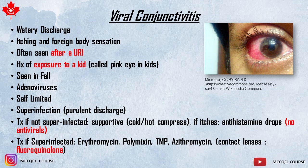In case of viral conjunctivitis, the discharge is not purulent — it's just watery and clear. It often accompanies an upper respiratory tract infection in the form of rhinorrhea, sneezing, and cough, and with exposure to a young patient, such as a young mom or school teacher. The responsible germ is adenovirus most of the time, and it happens in the fall during school season. Symptoms are usually less than a week and self-limited.